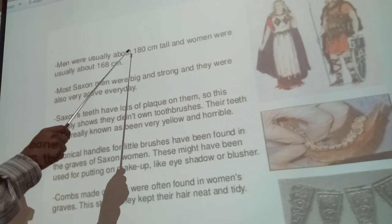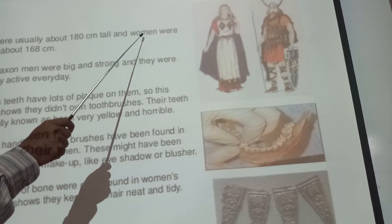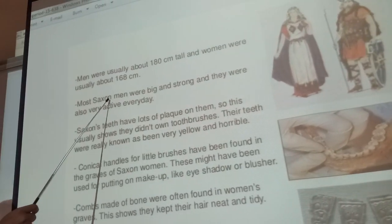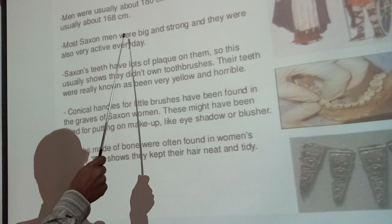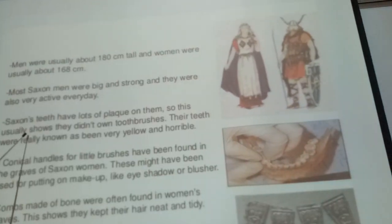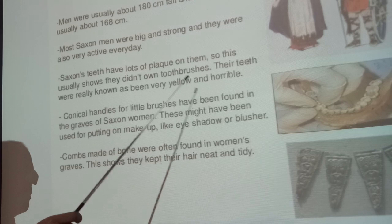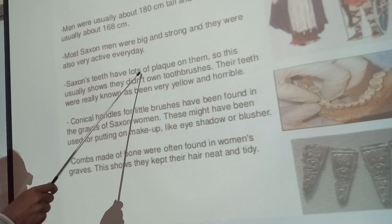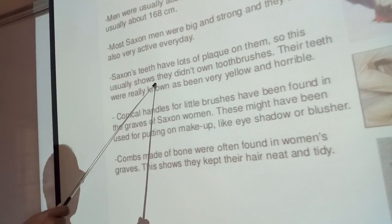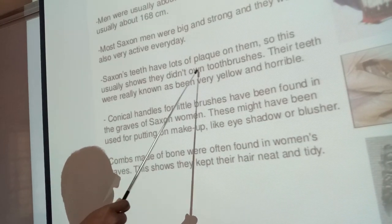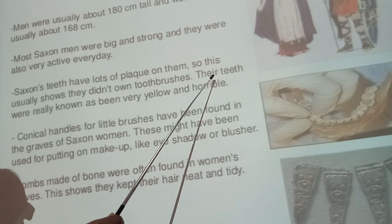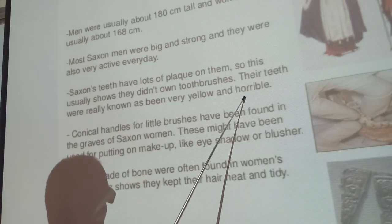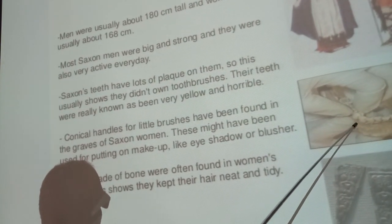Men were usually about 180 cm tall and women were usually about 168 cm. Most Saxon men were big and strong and very active every day. Saxon teeth had a lot of plaque. This usually shows they did not use toothbrushes. Their teeth were really known as being very yellow and horrible.